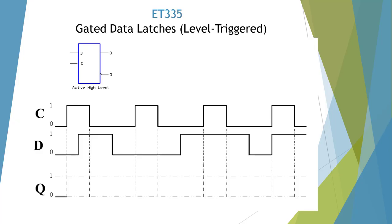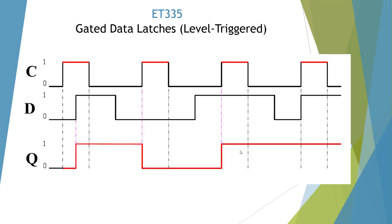Here we have a gated data latch and we're interested when the clock is high — only at that time. So we're high here, here, here, and here. Starting low, then going high, and it latches. Then looking at the data again — it comes over and latches. Looking at the data again, it goes up and latches. Then we take a look and it's high, and it latches. Here's our CAD drawing of the output and it looks like we did very well.